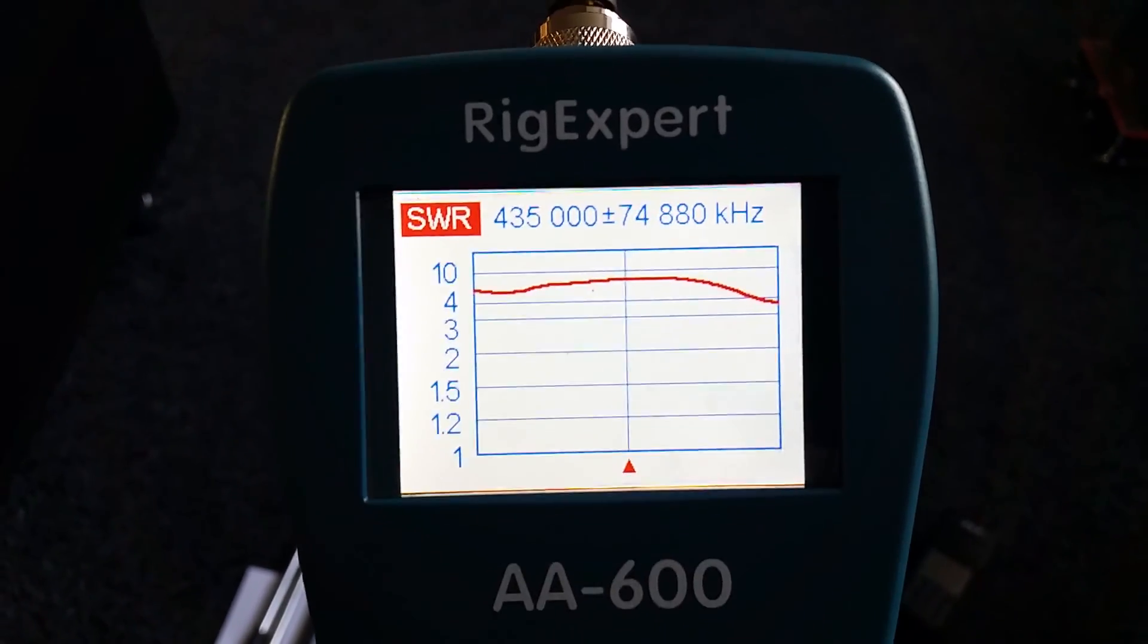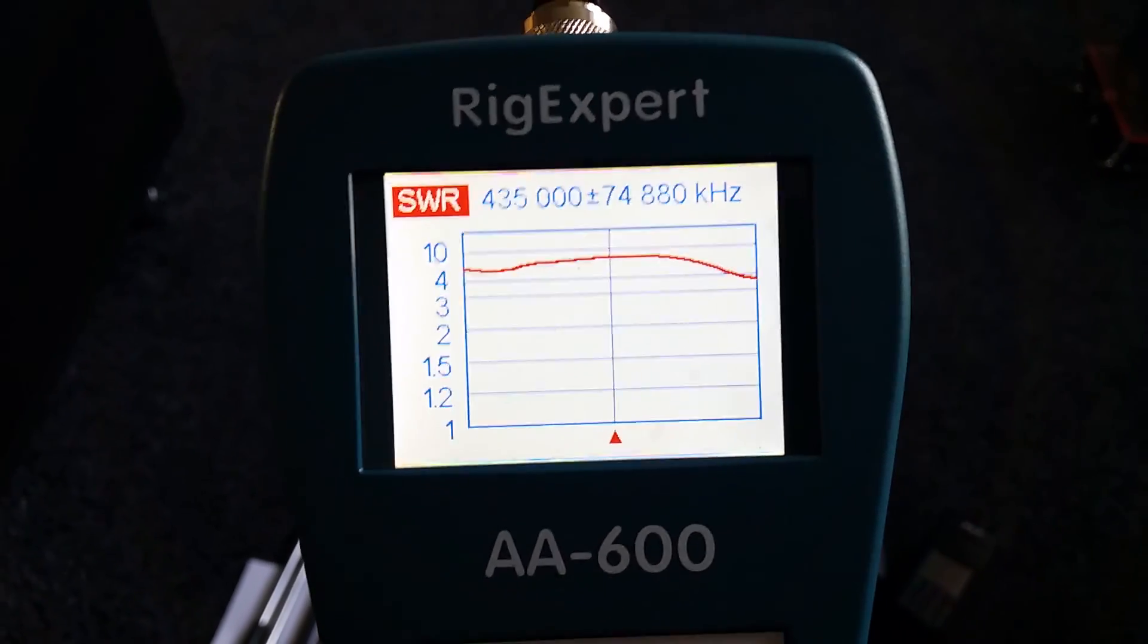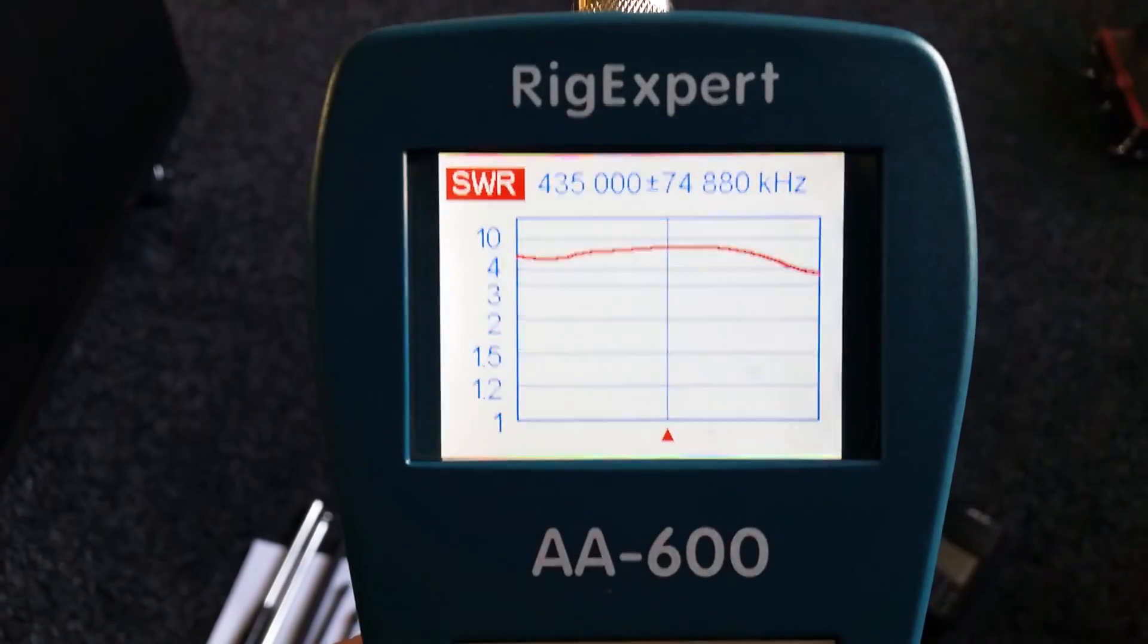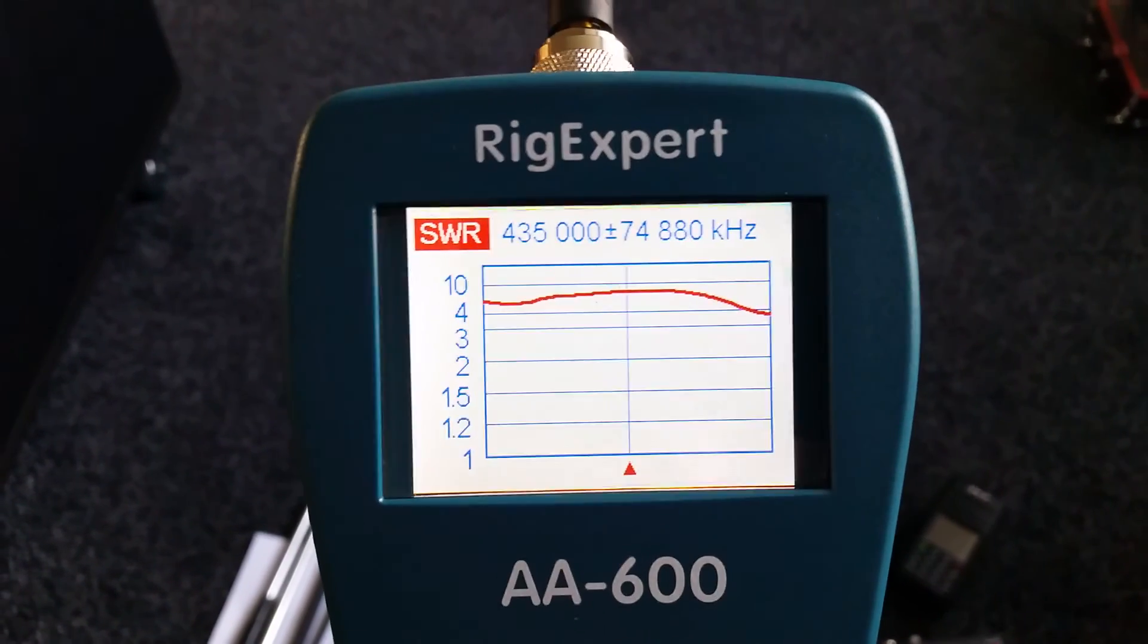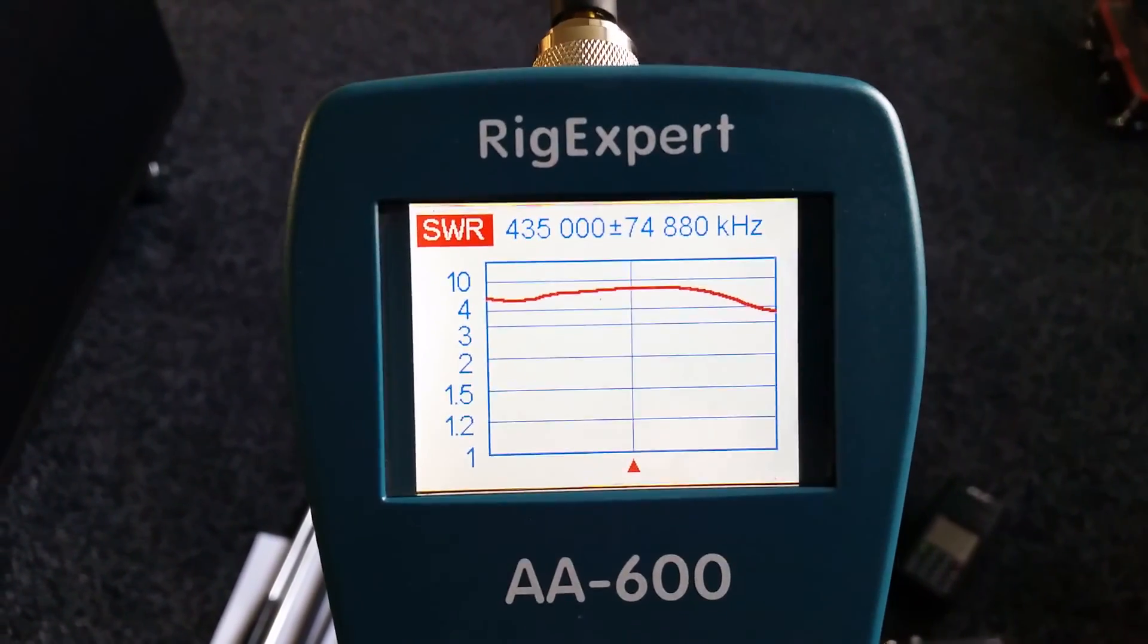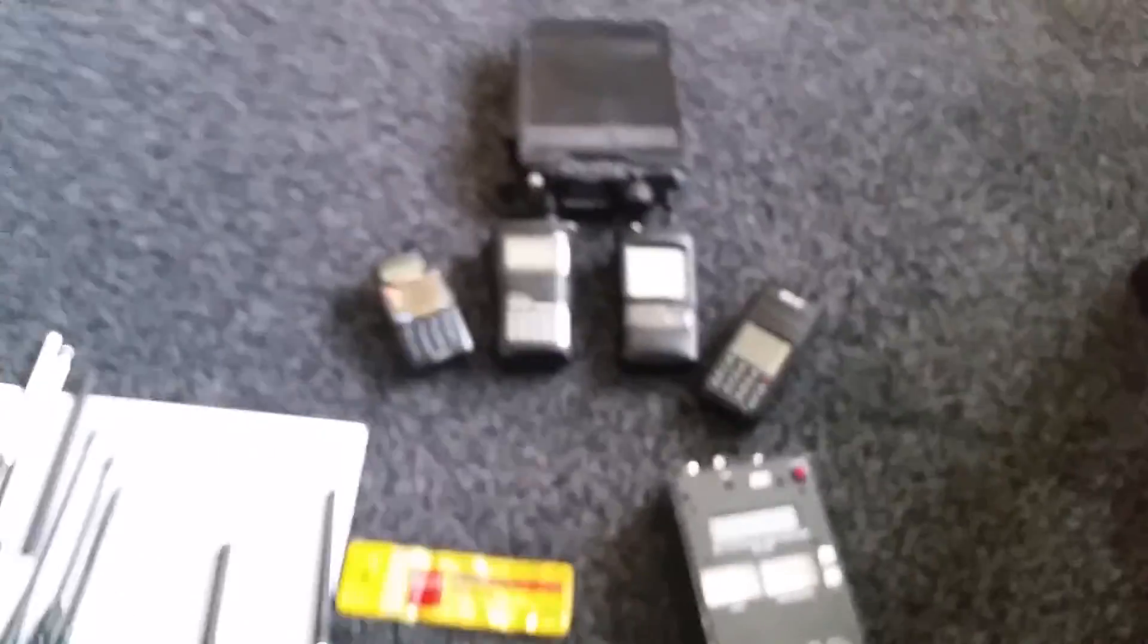It could be down to the fact that I'm not using the right gear. I know you can get vector analyzers and stuff like that. But saying that, they've all given the same response on the Rig Expert and the MFJ. I've been through them all.